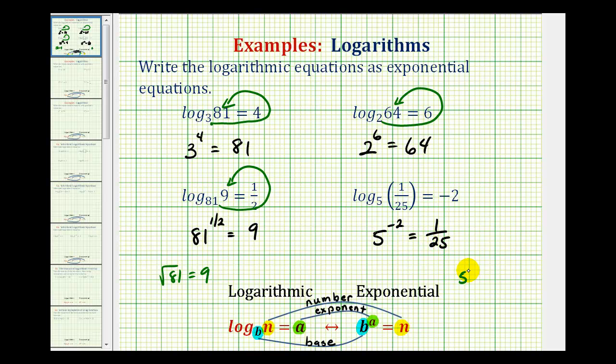Remember, five to the negative two is equal to one over five squared, which does equal one-twenty-fifth, so five to the negative two is equal to one-twenty-fifth.